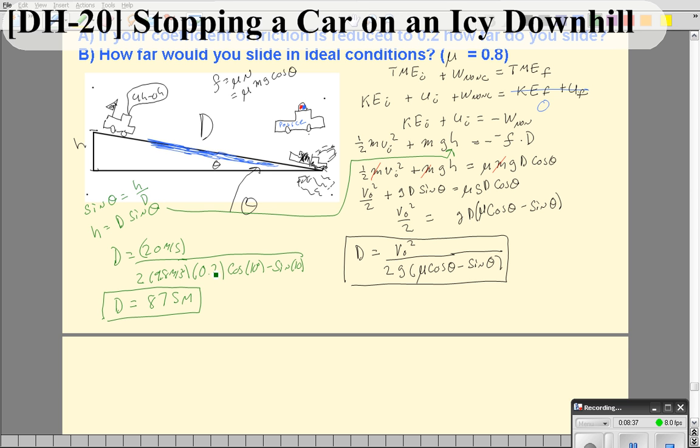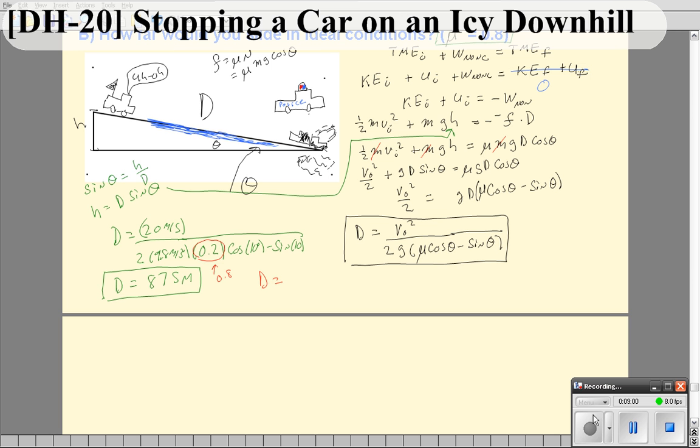If we repeat this for a mu that is much larger, 0.8, when you plug in and the only thing that changes is that this goes to 0.8, you'll get a stopping distance that's much more modest - you get a mere 33.5 meters. It's actually quite amazing how much further that is - that's 26 times further when the coefficient of friction goes to 0.2 than when it's 0.8 on a hill.